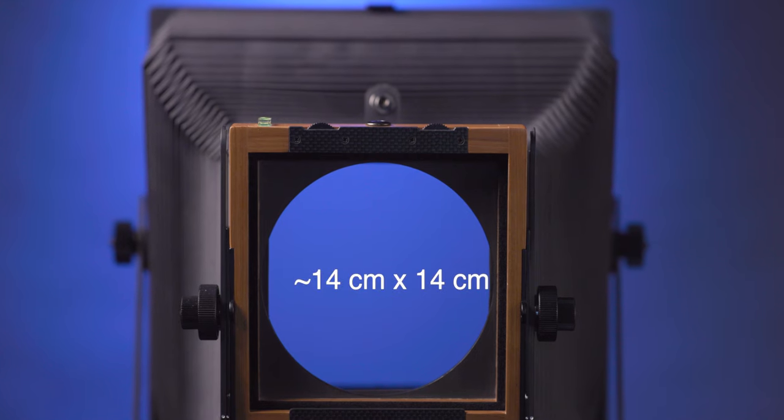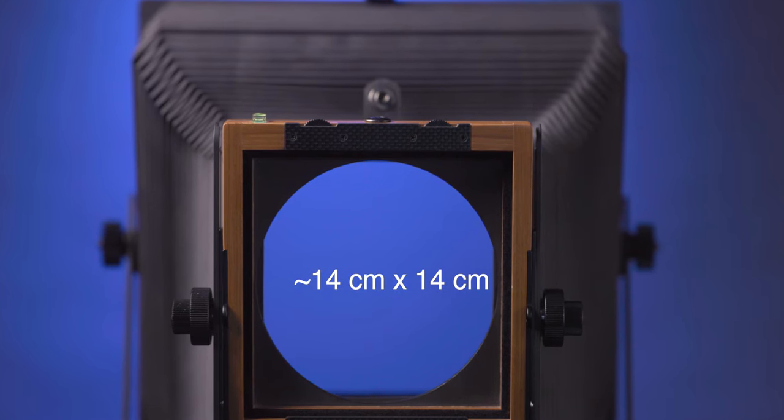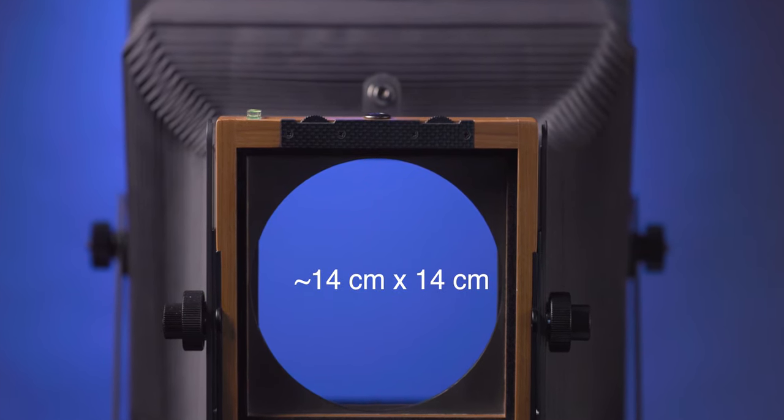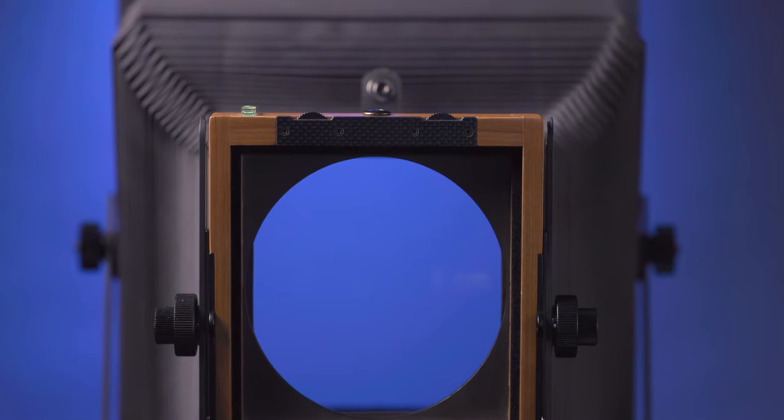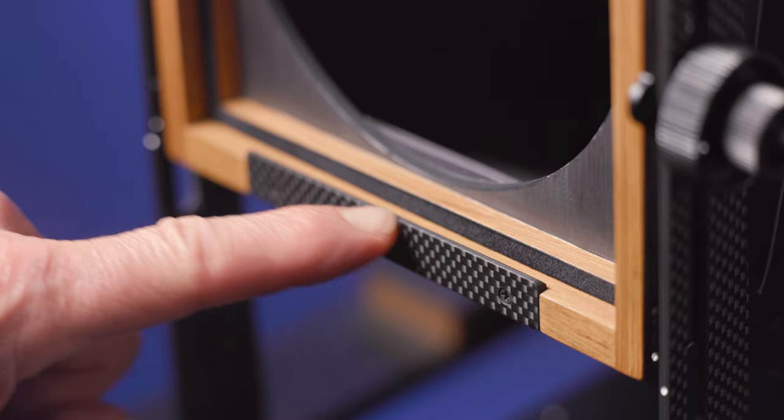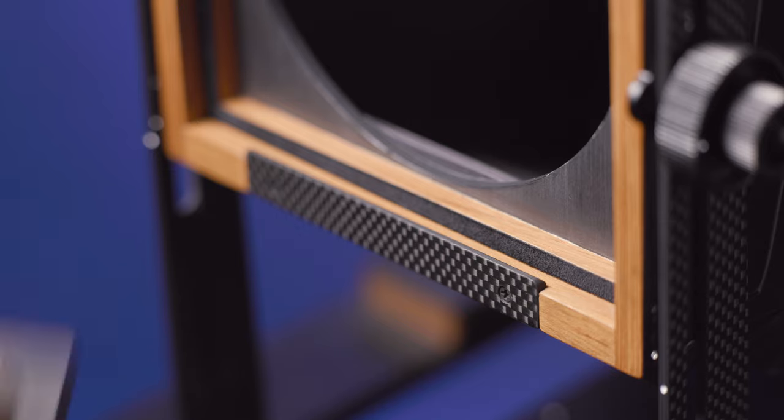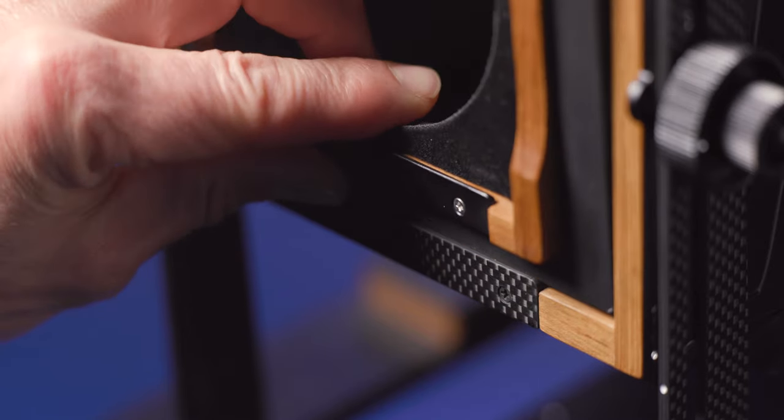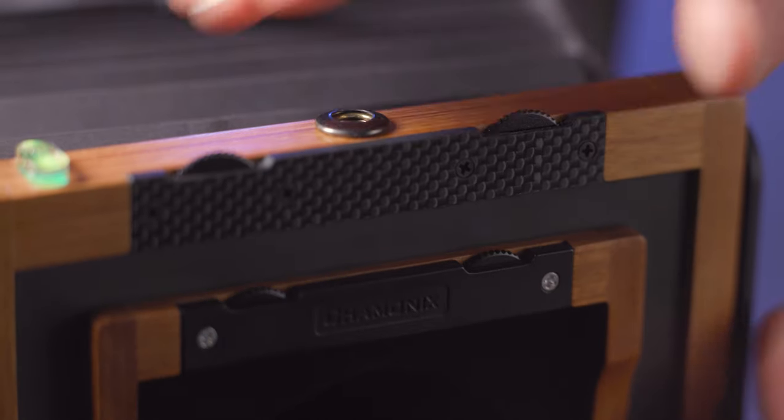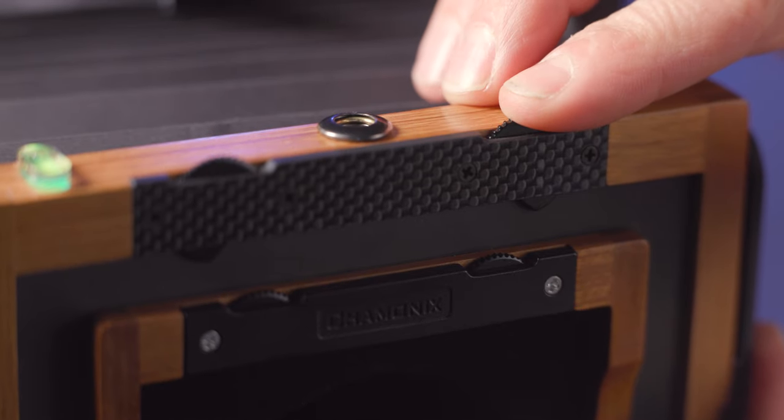The front standard lens opening is designed to accept the Sinar type lens boards which are 5.5 by 5.5 inches in size. The lens board is attached by slipping the bottom edge into this lip made of carbon fiber and the top edge is locked into place by these intelligently designed rotating slides.